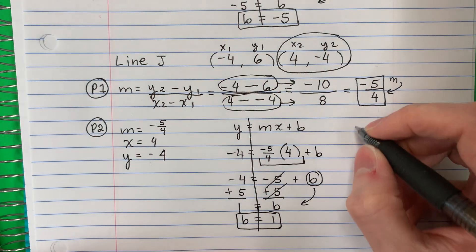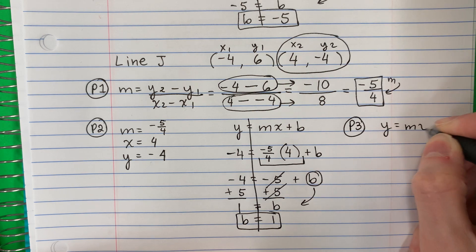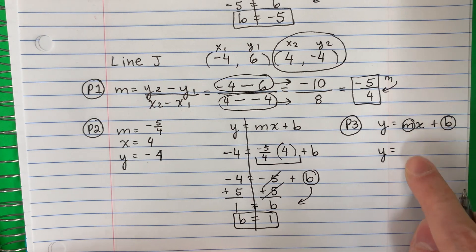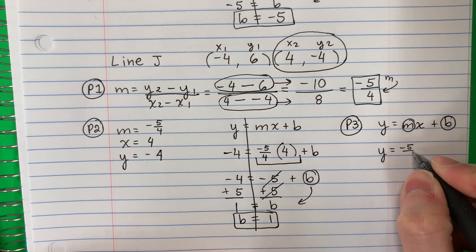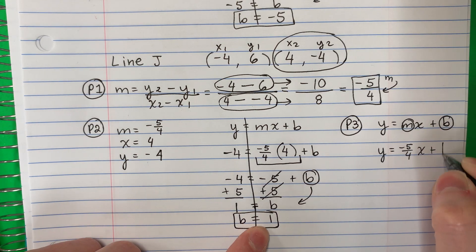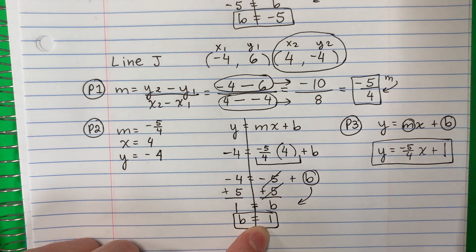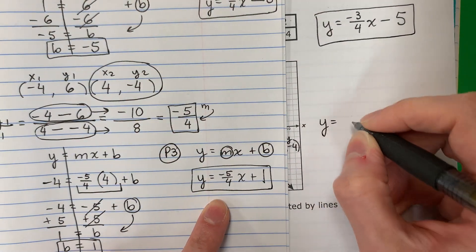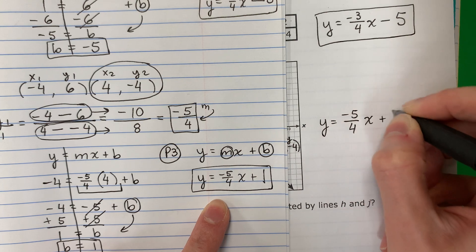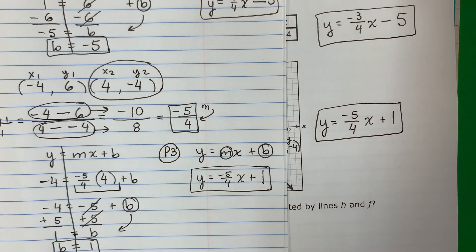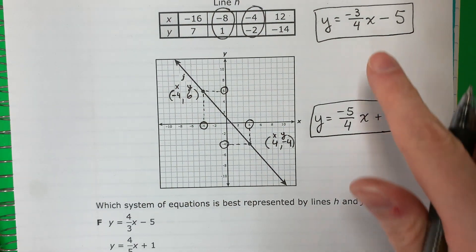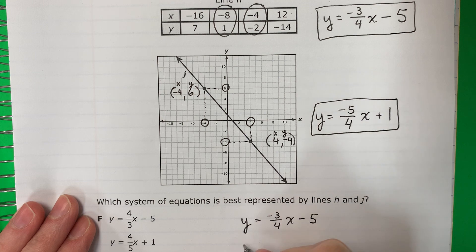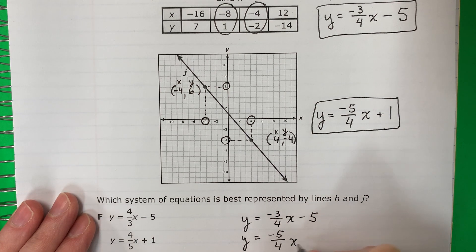Part three: Y equals MX plus B — change M and B. M is negative five-fourths and B is one. So y equals negative five-fourths x plus one. That is the equation for line J.